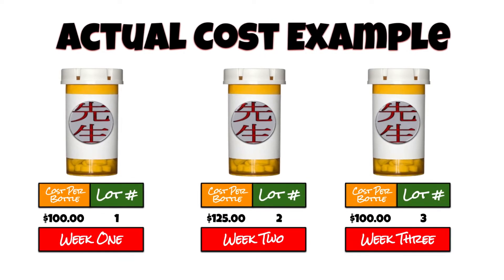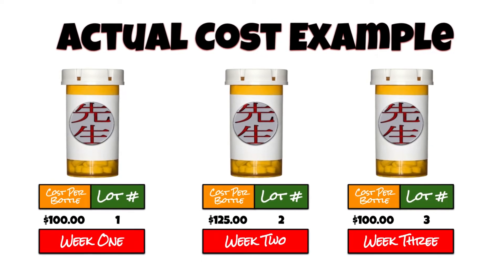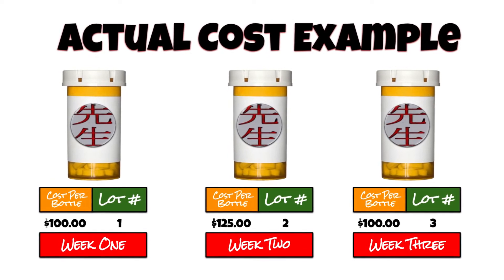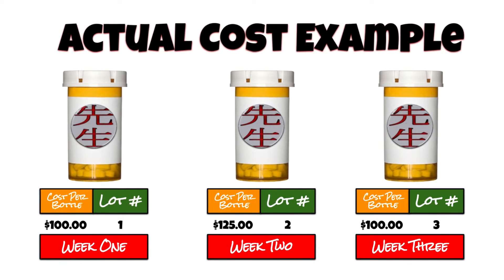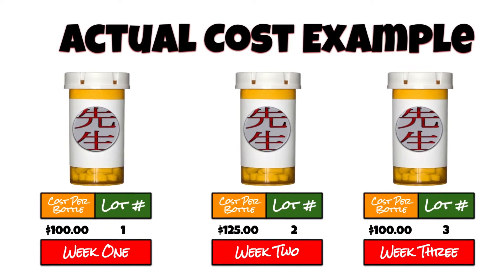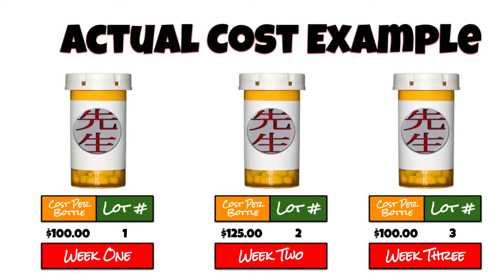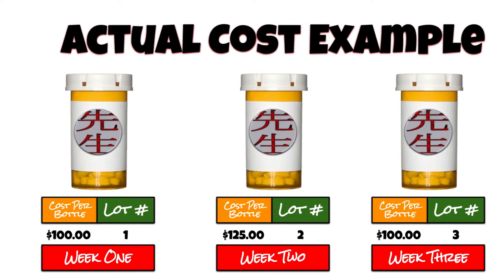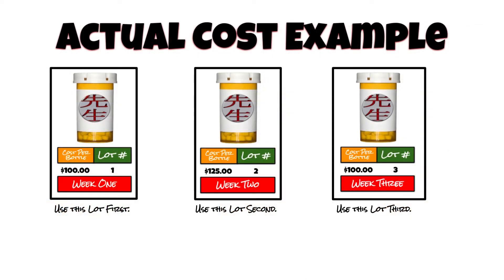In the third week, inflation goes down and the bottles again cost $100 per bottle. This order is received in and given a lot number of three. K&K receives these in and places each of the orders into bins. They use a FIFO method so that the oldest order is used first.